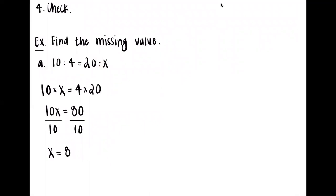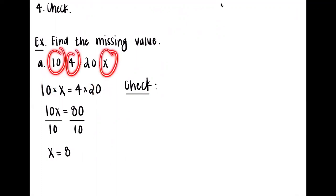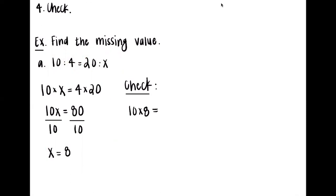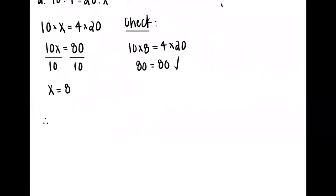Before we restate the proportion as our final answer, let's show the check step — because you could still have made a mistake, especially on a midterm or final. To check it, we multiply the extremes and multiply the means. Now we know x is 8, so the extremes give us 10 times 8 = 80, and the means give us 4 times 20 = 80. Since both products are the same, we confirm x = 8 is correct. So therefore, the proportion is 10 to 4 equals 20 to 8.